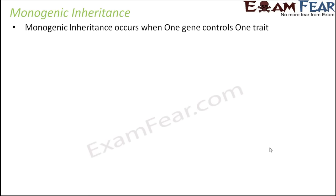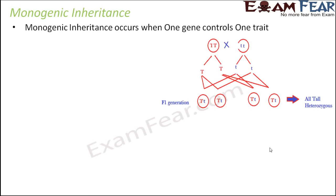In this type of inheritance, a child receiving a dominant allele from either parent will express the dominant form of the phenotypic trait. For example, these are the parents: capital T, capital T and small t, small t.